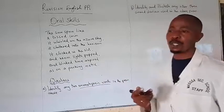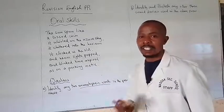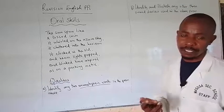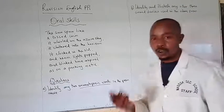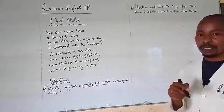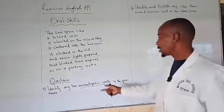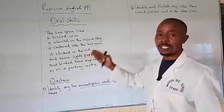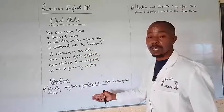For example, we talk about a snake hissing, the hyena howling, the lion roaring. Those are onomatopoeic words. And in the similar vein, we could go to this poem so that we get to identify the onomatopoeic words.